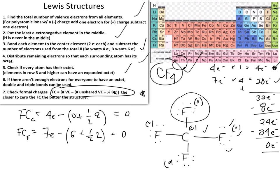Zero plus zero plus zero plus zero plus zero equals zero. The Lewis structure we've drawn is correct: it satisfies the octet of each atom and has the lowest possible formal charges. This is the basic approach to drawing Lewis structures.